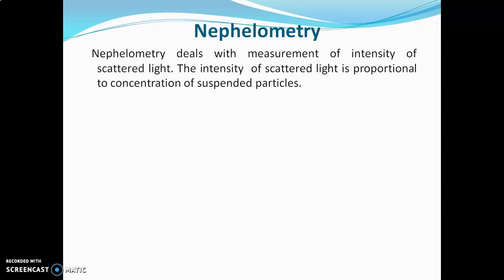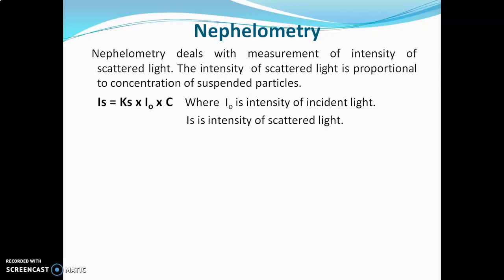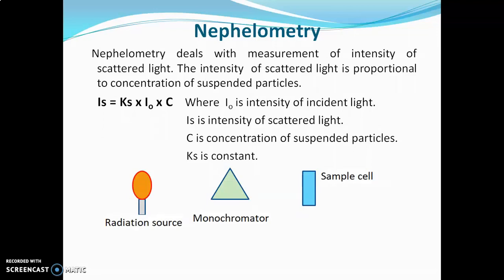Nephelometry deals with measurement of the intensity of scattered light. The intensity of scattered light is proportional to the concentration of suspended particles. The equation is: Iₛ = Kₛ × I₀ × C, where I₀ is the intensity of incident light, Iₛ is the intensity of scattered light, C is the concentration of suspended particles, and Kₛ is the constant. In nephelometry, the radiation source, monochromator, and sample cell are in a straight line, but the detector is placed at 90 degrees or 45 degrees to the radiation source, because scattering can occur in any direction.